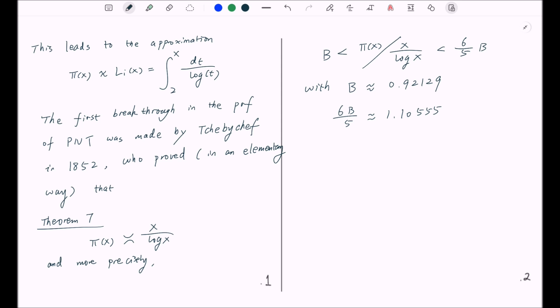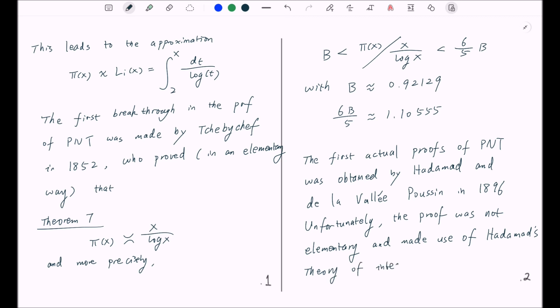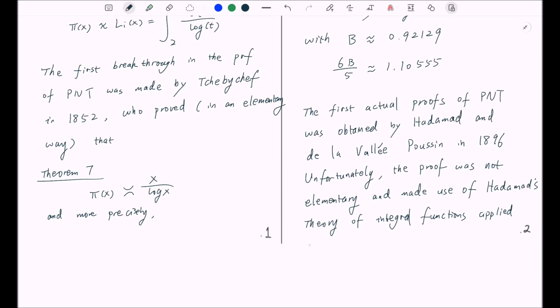The first actual proofs of prime number theorem was obtained by Hadamard and de la Vallée Poussin in 1896. But unfortunately, the proof was not elementary and actually made use of Hadamard's theory of integral functions applied to the Riemann zeta function ζ(s). This series is absolutely convergent when the real part of s is bigger than 1. And following this, they also use a clever application of a trigonometric identity, which we will not discuss here.